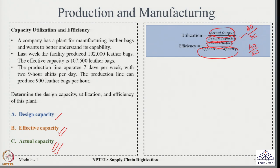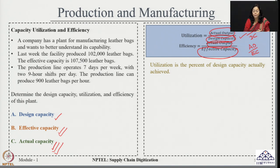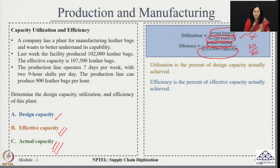Let us use these formulas to calculate the utilization and efficiency for the given case. Utilization is the percentage of the design capacity which is actually achieved — what you are capable of at the maximum level and what percentage of it you are able to achieve. Whereas efficiency is the percentage of effective capacity which is actually achieved, taking care of all your planned activities and finding what percent of that effective capacity is actually reached.